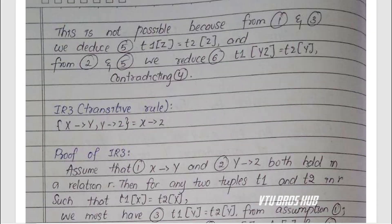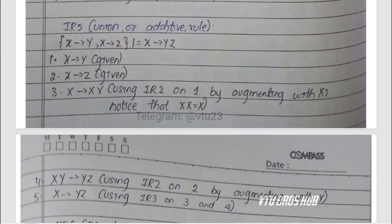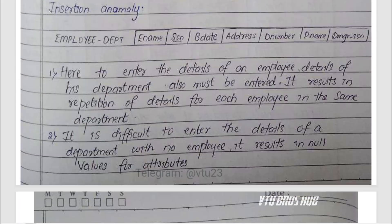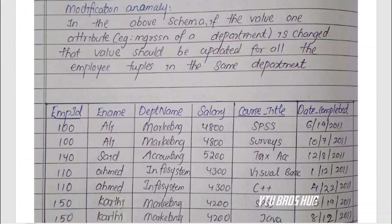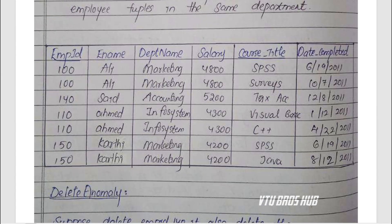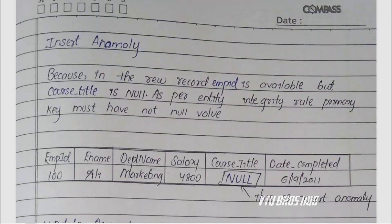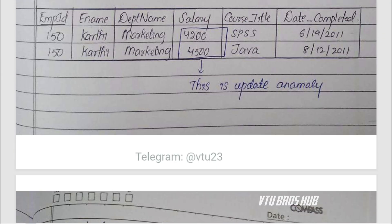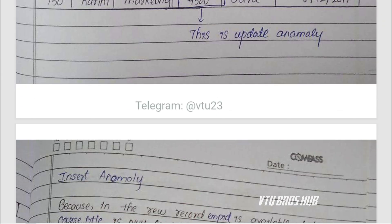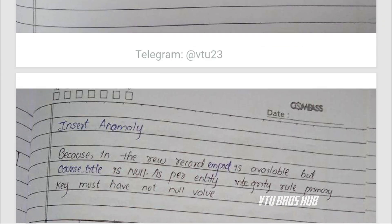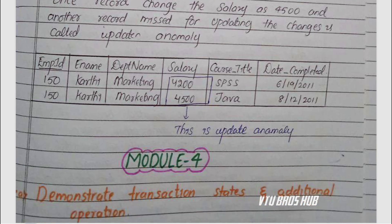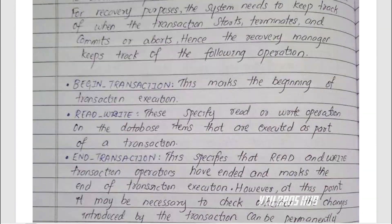Module 4: advanced SQL and transactions. Write and revise nested queries, views, triggers, and assertions. Understand what makes a transaction atomic and how to ensure serializability and recoverability.